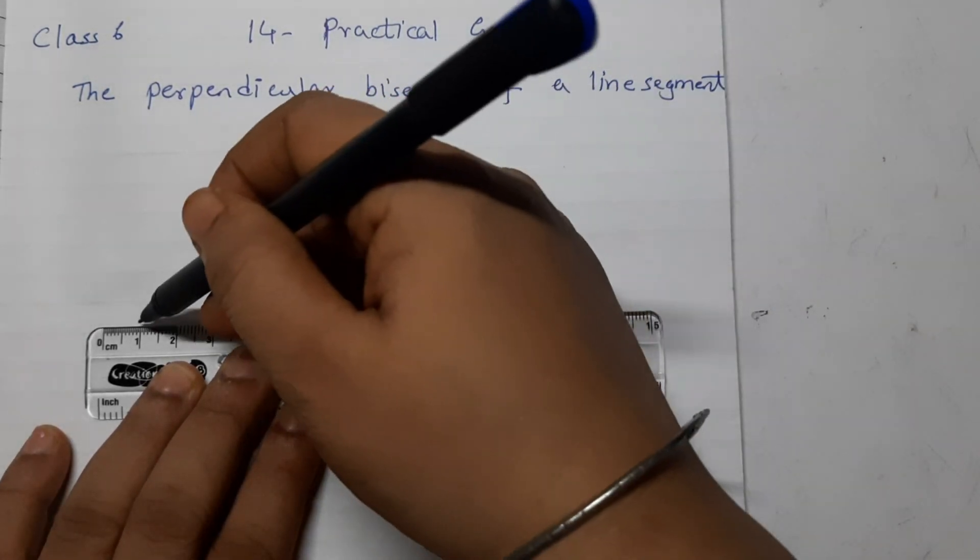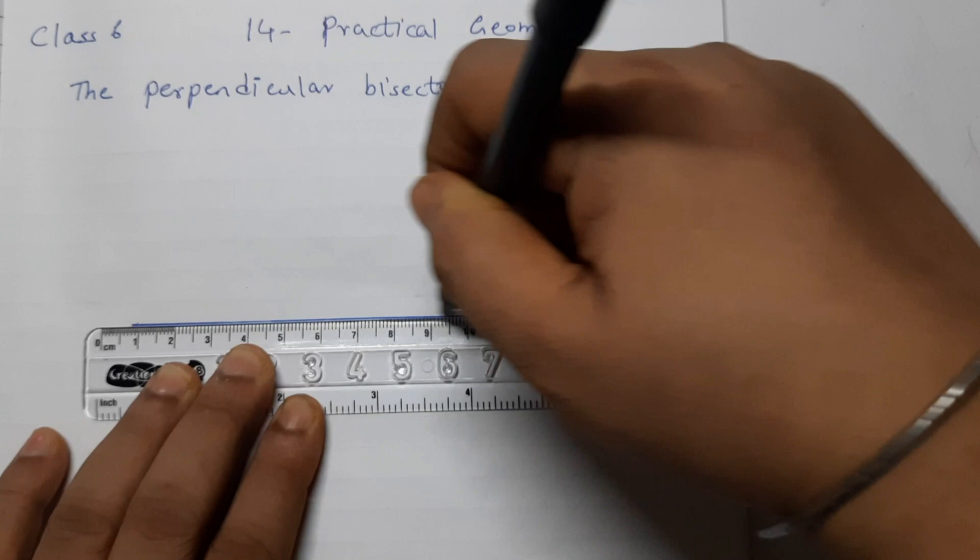The first step is to draw a line segment AB of any length.